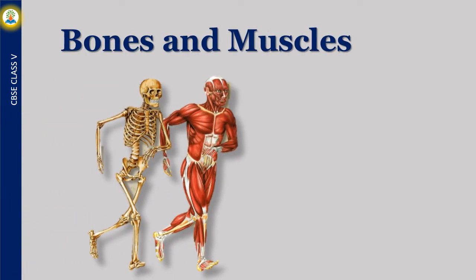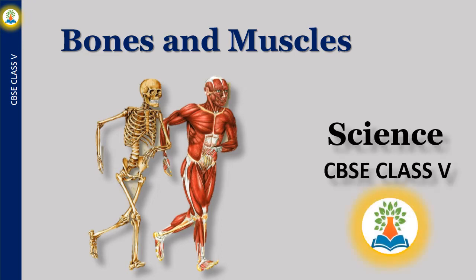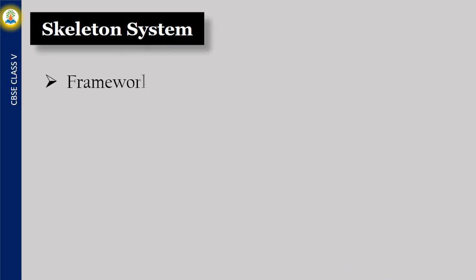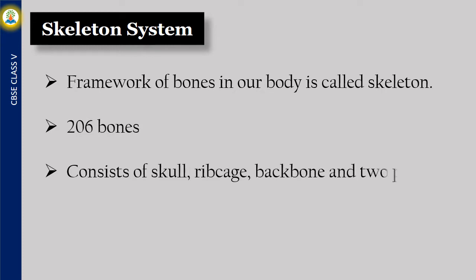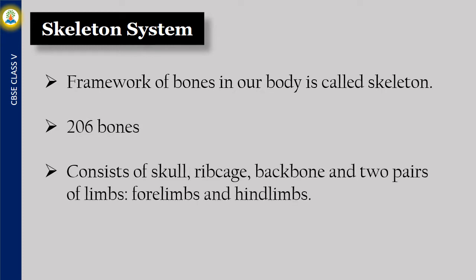Hello friends! In this video we will learn about bones and muscles. The framework of bones in our body is called skeleton. There are 206 bones. The human skeleton consists of skull, ribcage, backbone and two pairs of limbs, forelimbs and hindlimbs.